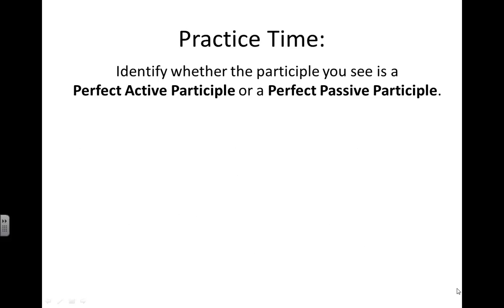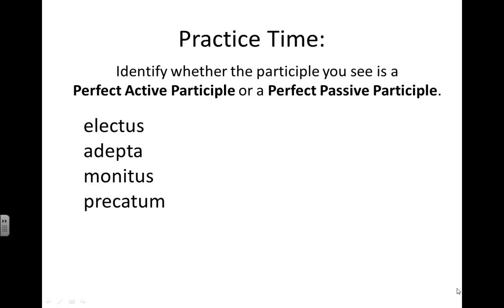Let's practice now. I'm going to show you a series of participles. You need to identify whether they are perfect active or perfect passive. The participles are: electus, adepta, monitus, precatum, ingressus, and fusis. Pause the recording here and work these examples out. When you are ready for the answers, restart the recording.